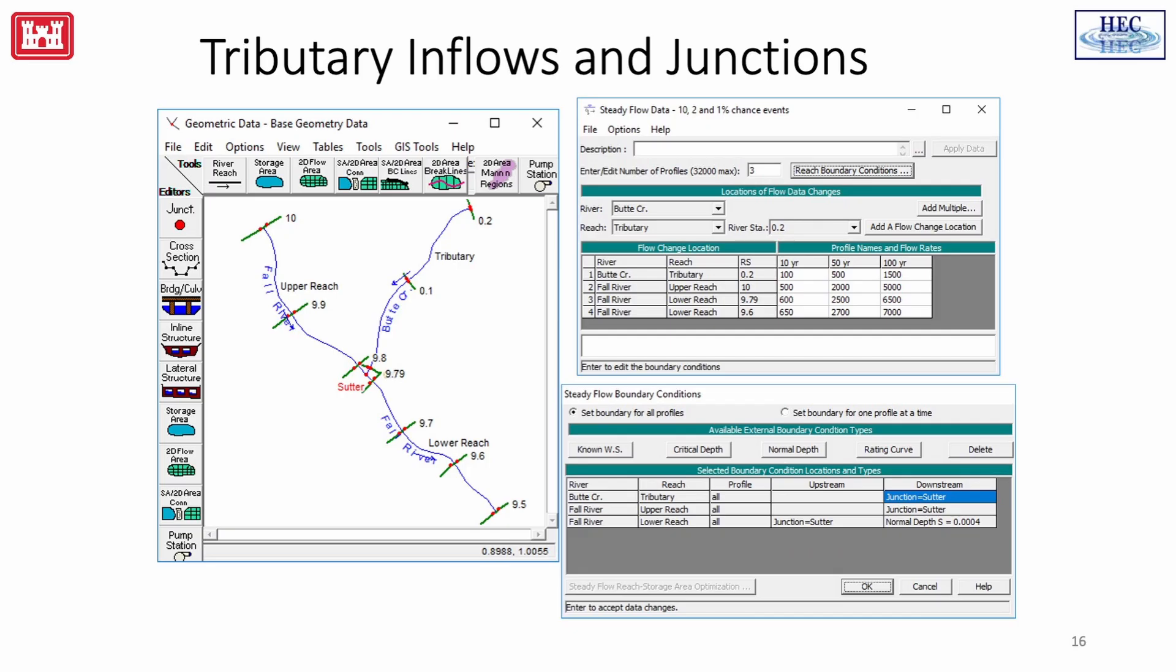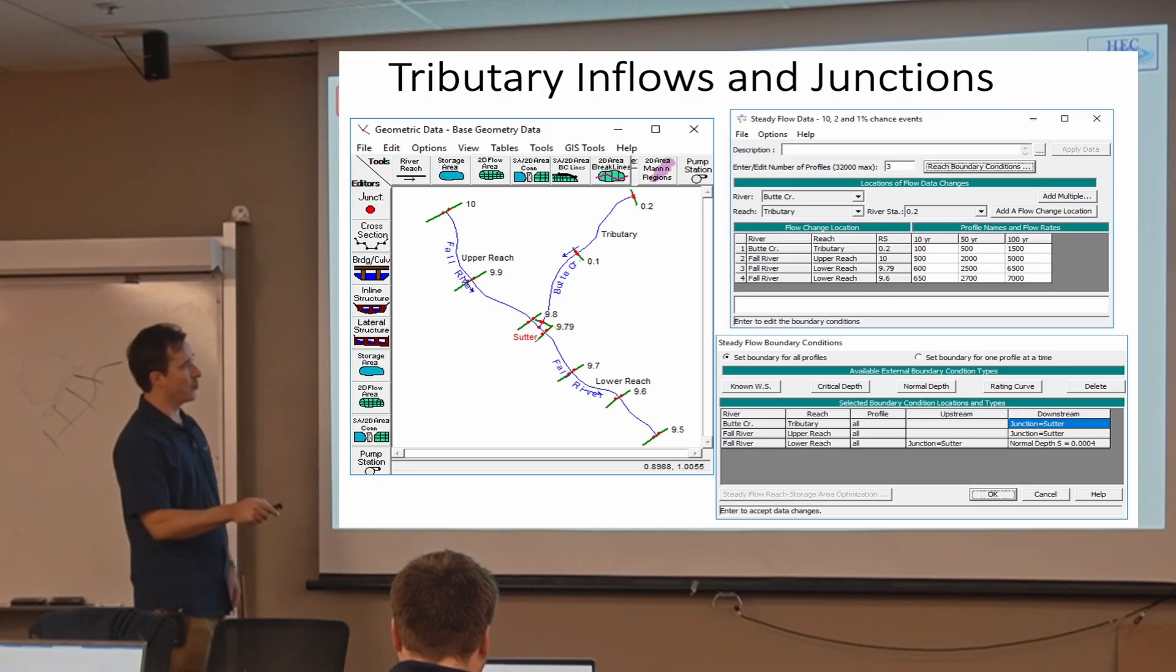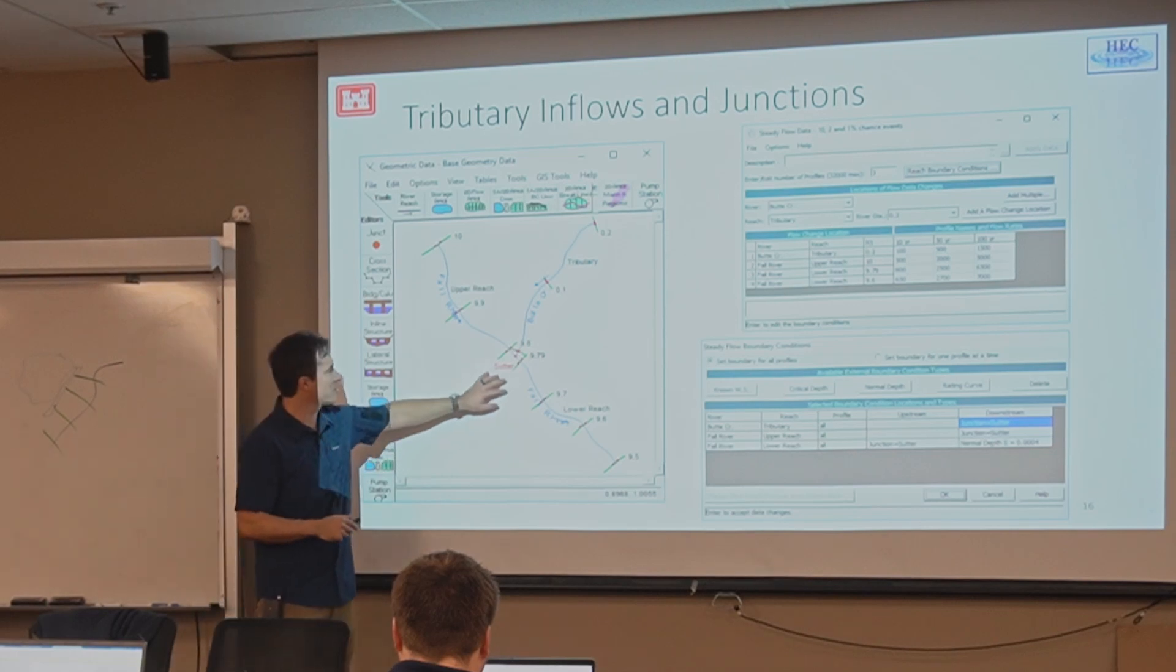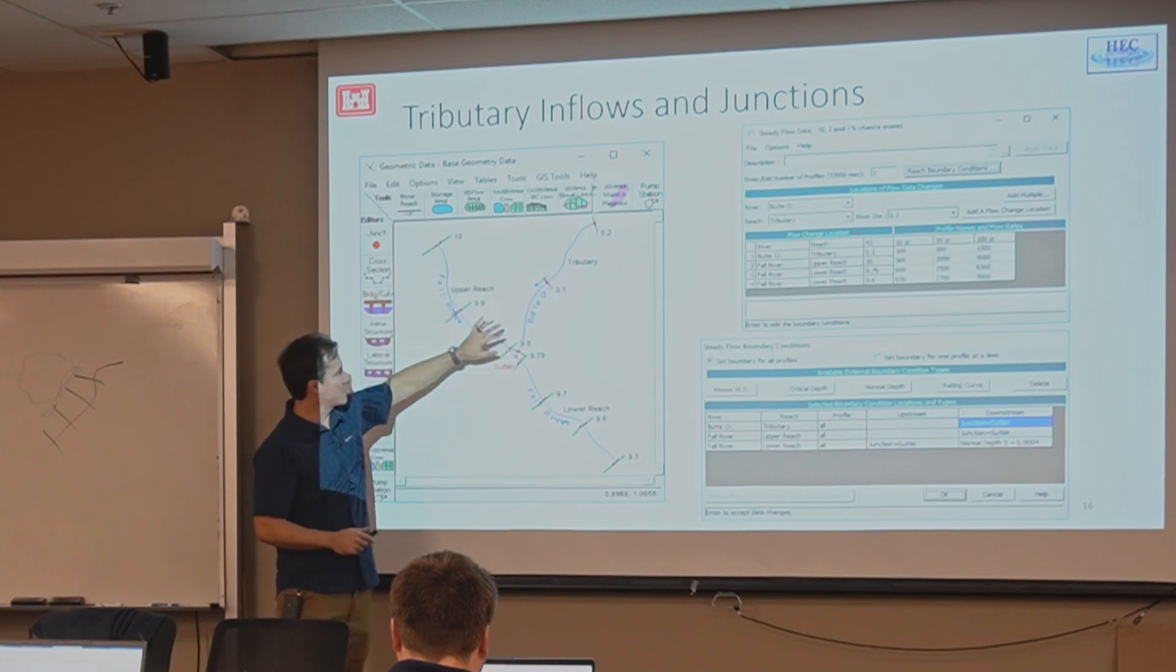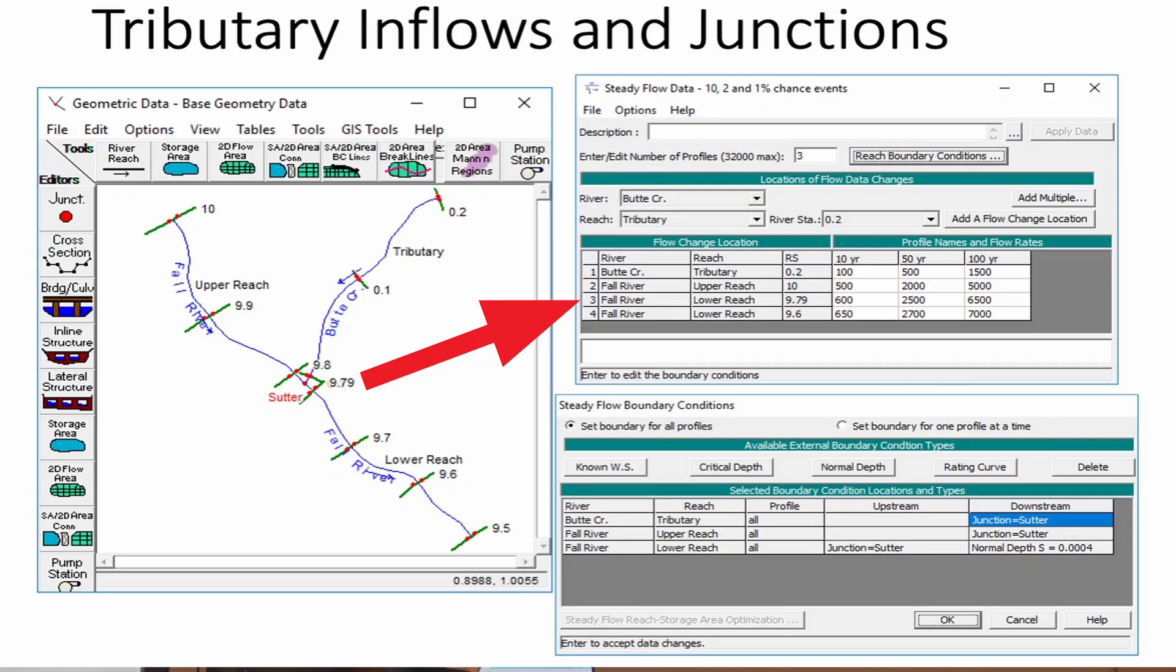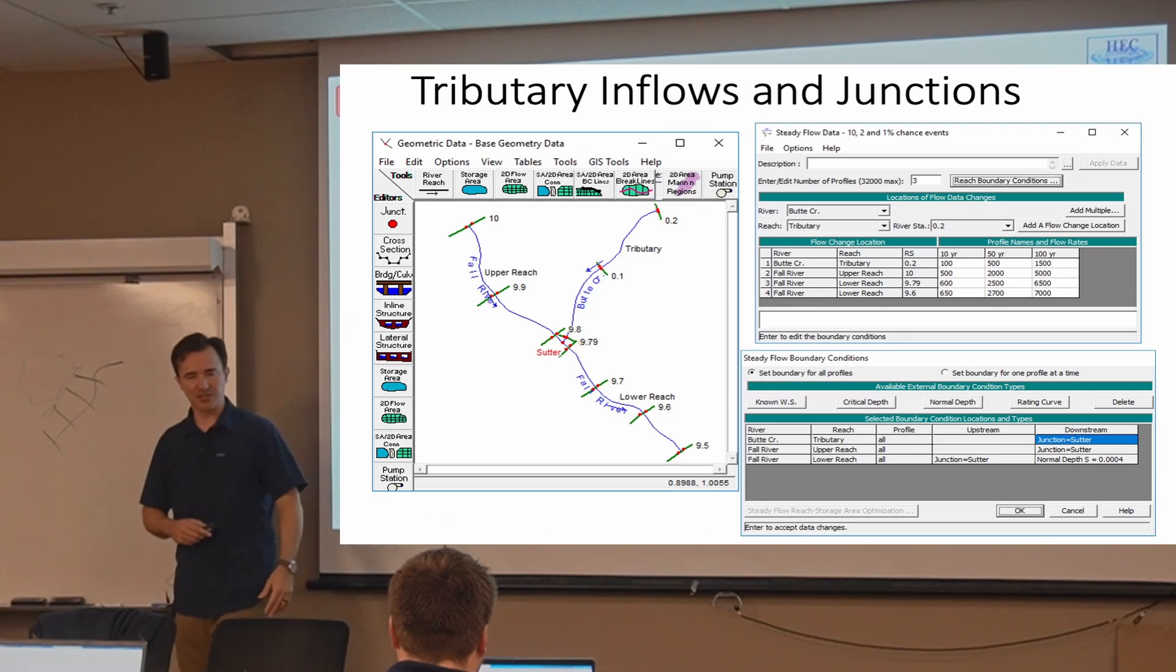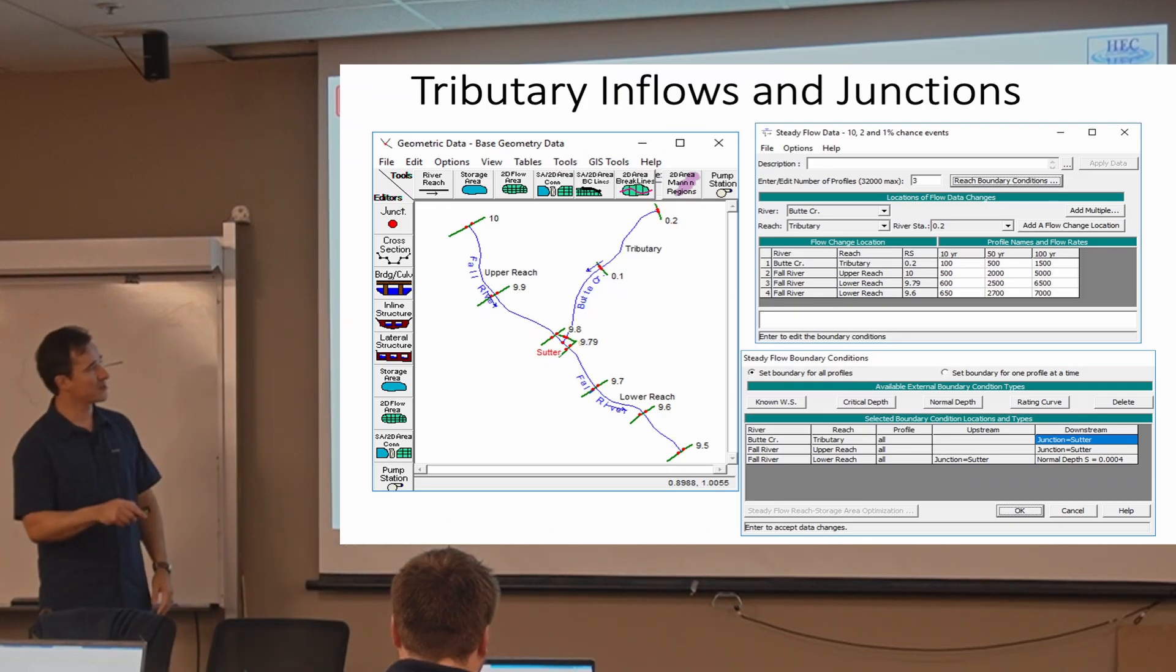And this is the same thing I was talking about before, about how you can deal with the junctions. So you'll notice here there's 9.79, which is this location. And so the flow, instead of letting the model kind of solve for that flow at that location based on the incoming flows from these two rivers, it's overwritten here. And then again, it's overwritten here to account for that flow attenuation. And you can add as many points as you want, these flow change locations.